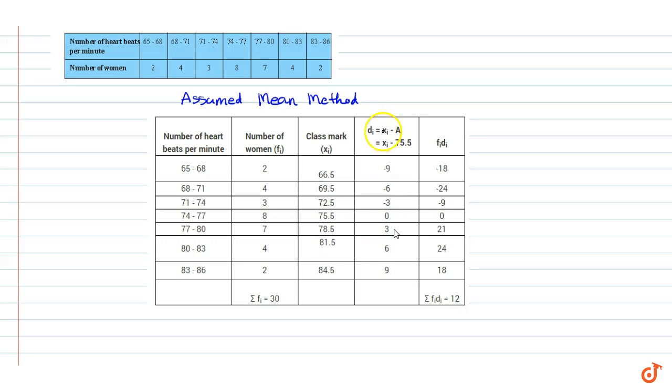The deviations are represented as di equals xi minus A, where A is the assumed mean. Assumed mean stands for the middle value of classmark. Here it is 75.5, so di equals xi minus 75.5.